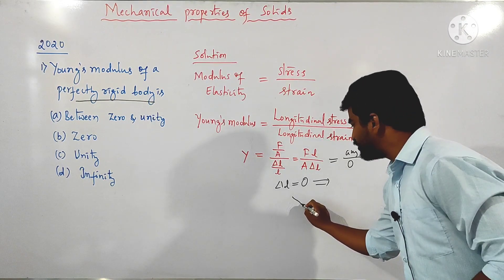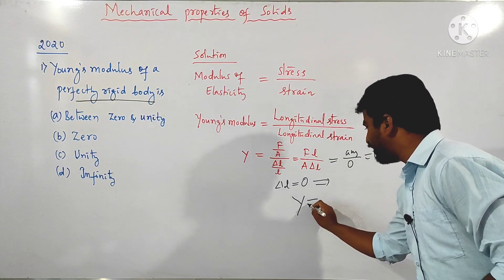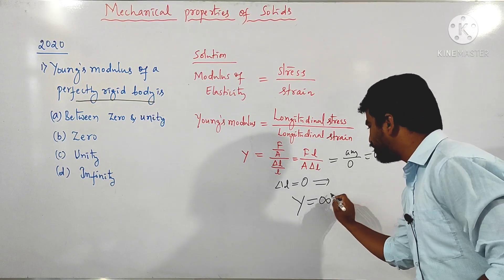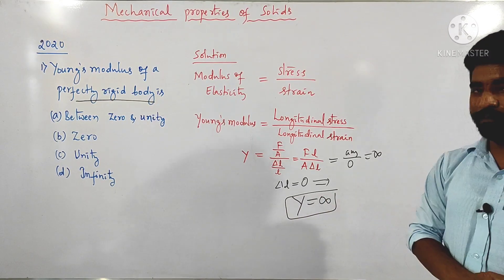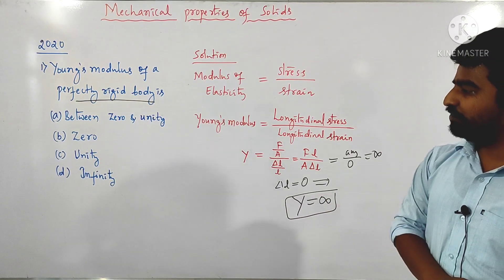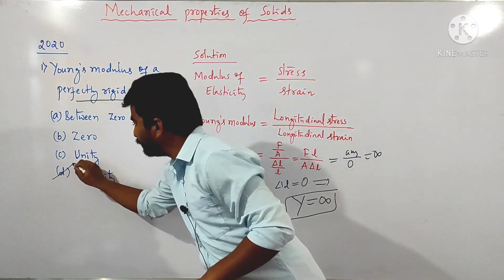When the change in length is zero, Young's modulus — which has change in length in the denominator — becomes infinity. So, Young's modulus for a perfectly rigid body is infinity. The answer for the question is infinity.